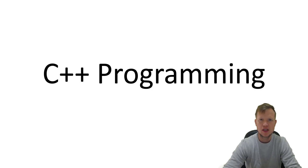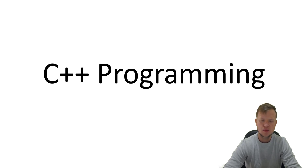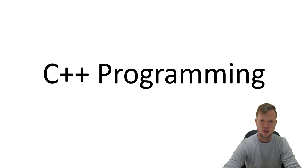Welcome to C++ programming. Today we're going to talk about the Unary Scope Resolution Operator. In C++ programming, the Unary Scope Resolution Operator enables us to distinguish between the local and global variables.